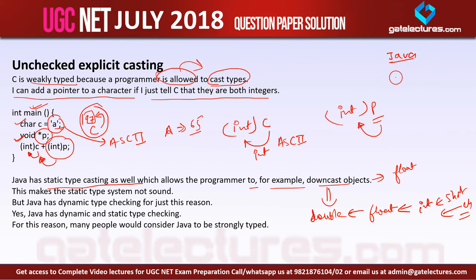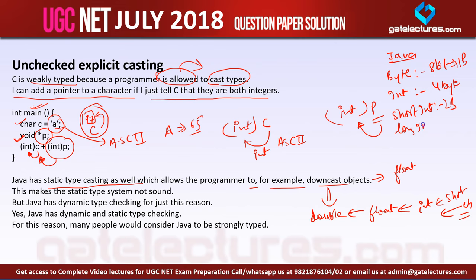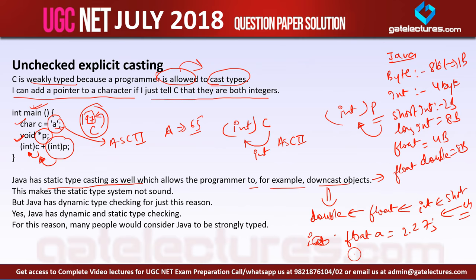In Java, a byte is 8 bits, an integer is 4 bytes, a short integer is 2 bytes, a long integer is 8 bytes, float is 4 bytes, and double is 8 bytes. If I write 'double a = 2.27' and then 'float b = a', this is not allowed because the size of double is greater than the size of float. So this type casting is not implicitly allowed — we have to do it explicitly ourselves, where loss of information can occur.